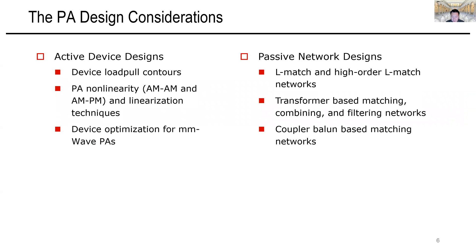For the passive network designs, we will start with L-match networks for matching and impedance transformation and discuss their limitations. We will then present transformer-based matching, power combining, and filtering networks. Finally, we will introduce the coupler-Balun-based matching networks that are becoming very popular in high millimeter-wave PA designs.